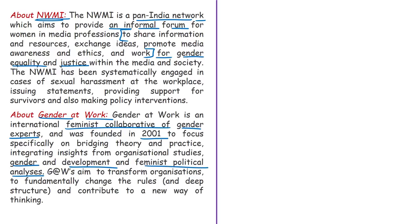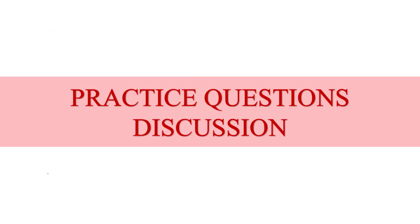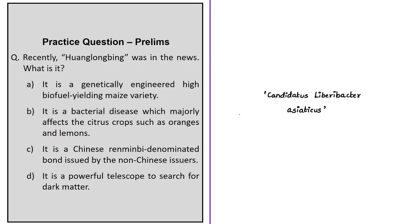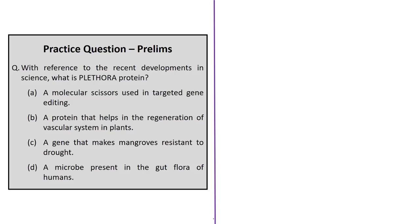We have come to the last section — the practice questions discussion session. The first question is with reference to Huanglongbing: 'Recently Huanglongbing was in the news — what is it?' The correct answer is option B: it is a bacterial disease which majorly affects citrus crops such as oranges and lemons. The name of the bacteria is Candidatus liberibacter asiaticus. This disease was in the news with reference to a discovery by scientists from the USA that dogs can be trained to sniff the disease in trees at an early stage to prevent further spreading.